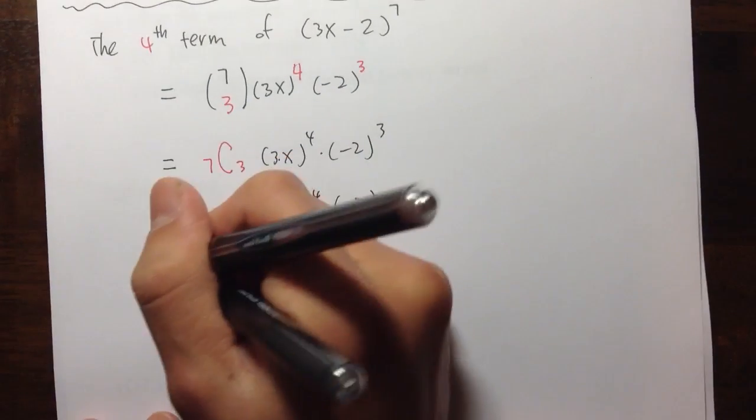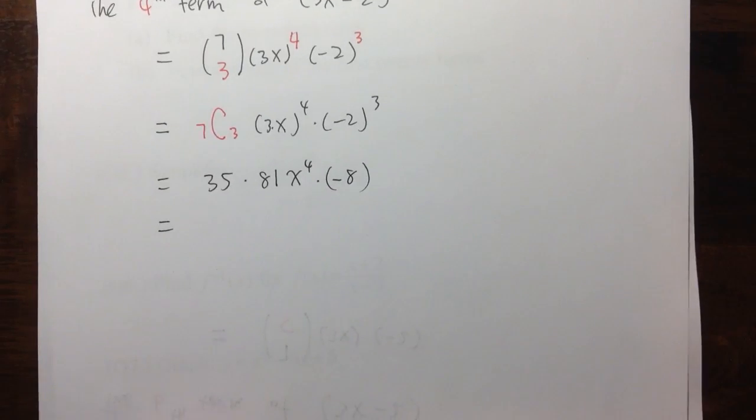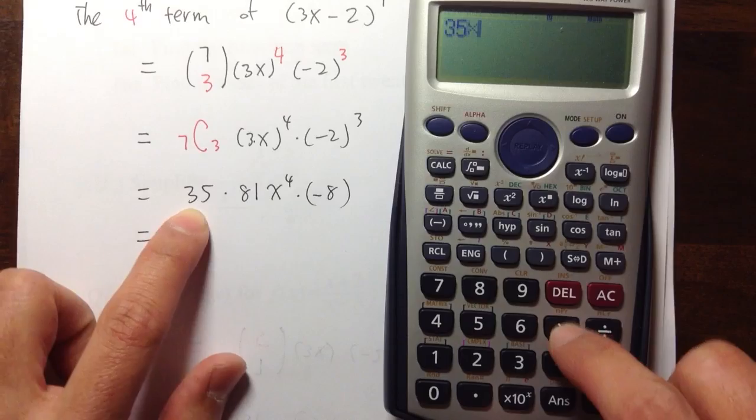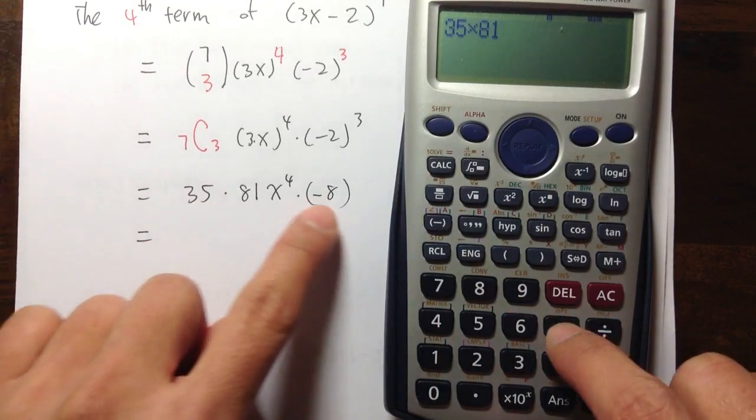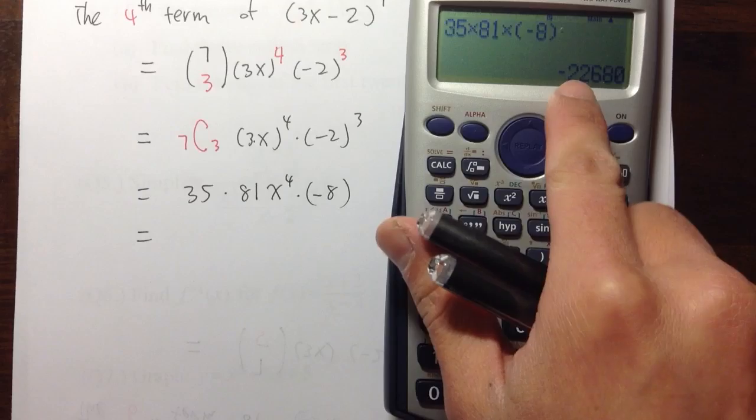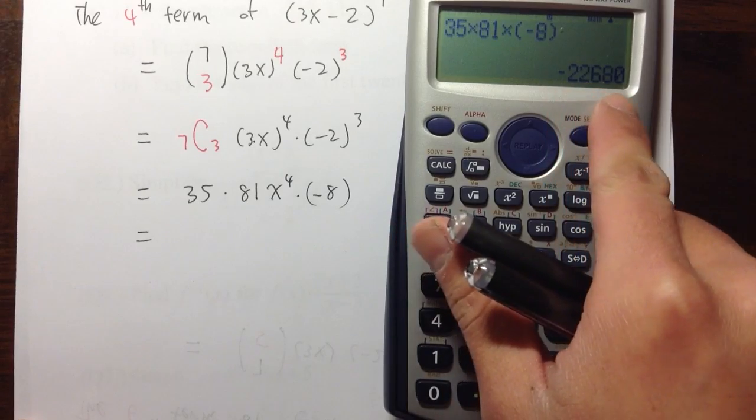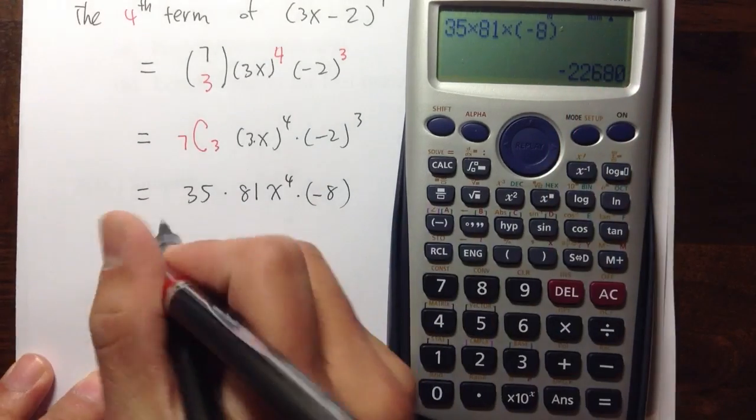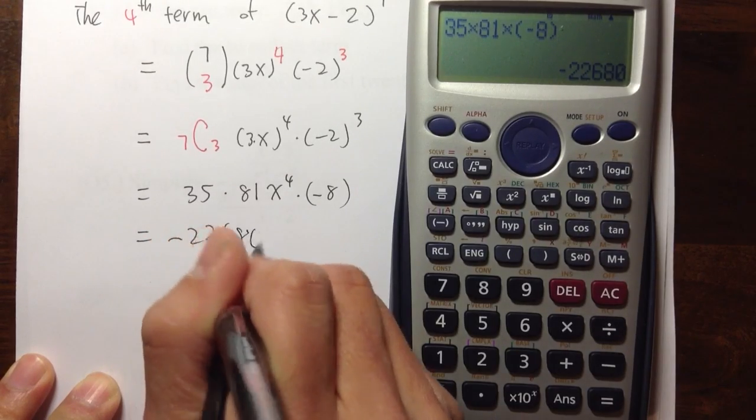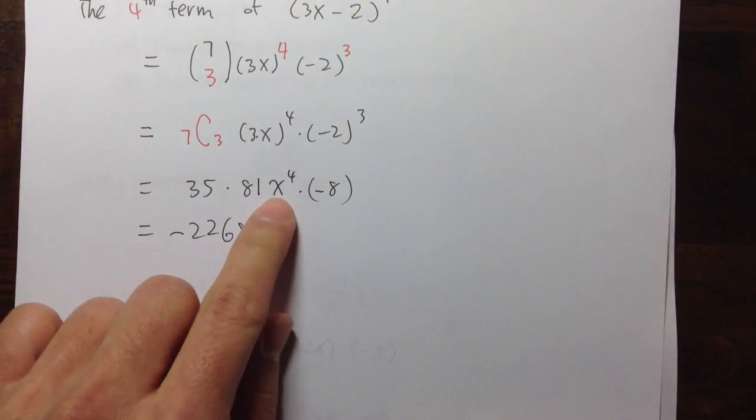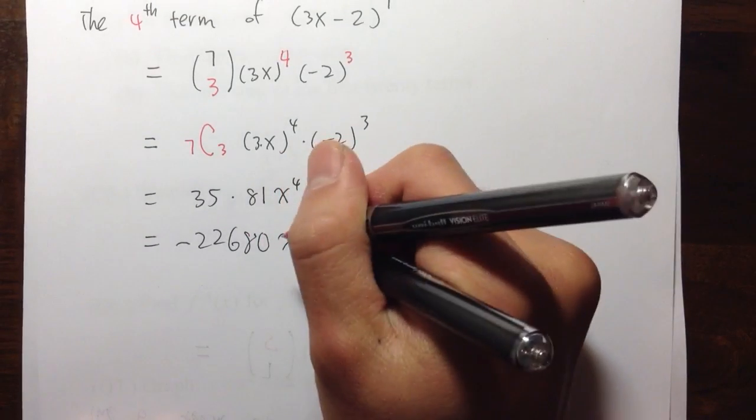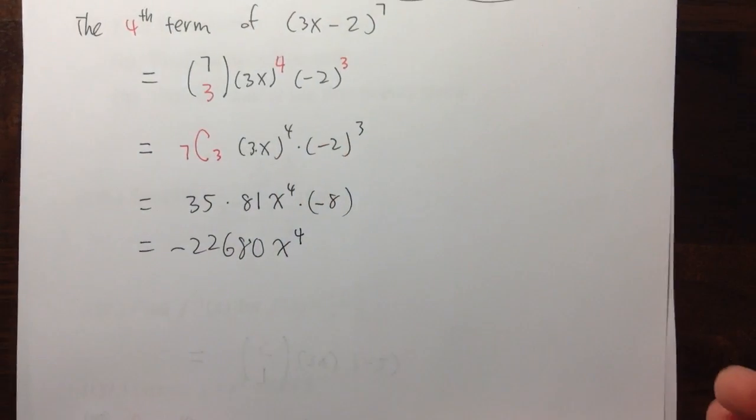I'm going to put parentheses around it. Then, again, calculator time. I get 35 times 81 times, parentheses, negative 8. I have negative 2,6,8,0. So, let me write it down like this. Negative 2,6,8,0. And then write down x to the 4th power, x to the 4th power.